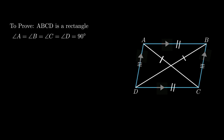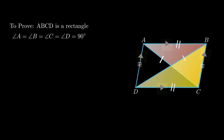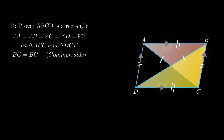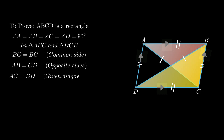Since opposite sides are already equal and parallel by the properties of a parallelogram, we only need to prove each vertex angle equals 90 degrees. To prove this, consider triangle ABC and triangle DCB. Side BC is common to both triangles, so BC = BC. Side AB equals side CD as opposite sides of a parallelogram are equal, and diagonal AC equals diagonal BD. By the side-side-side rule, triangle ABC is congruent to triangle DCB.